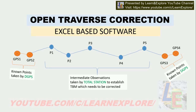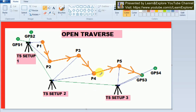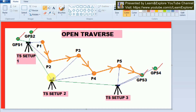This is our open traverse line diagram, with the help of which I will explain the basic concept behind open traverse theory. Here you can see GPS1, GPS2, GPS3, and GPS4 points. These points are taken and corrected by DGPS, so their coordinates are known to us. With the help of a total station, we will take the intermediate points between these GPS points.